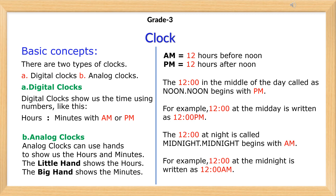Analog clocks use hands to show us the hours and minutes. The little hand shows the hours. The big hand shows the minutes.